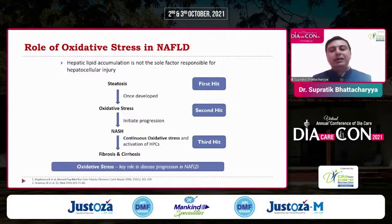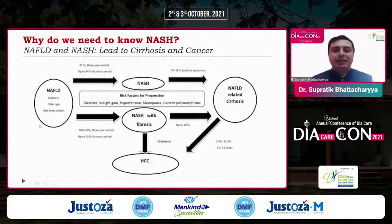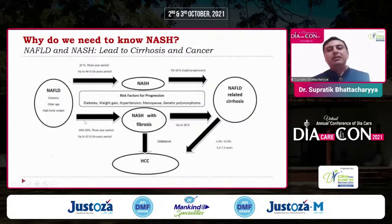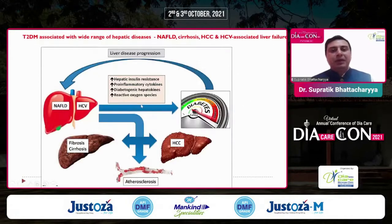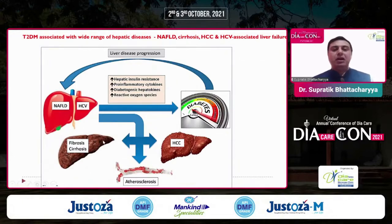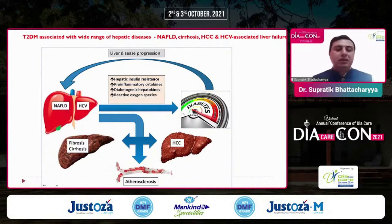Oxidative stress plays a key role in disease progression in NAFLD. The entire spectrum goes from NAFLD to NASH, NAFLD-related cirrhosis, and also NASH with fibrosis — the final stage being hepatocellular carcinoma. Risk factors for progression include dysglycemia, weight gain, hypertension, menopause, genetic polymorphisms, increased hepatic insulin resistance, inflammatory cytokines, diabetogenic hepatokines, and reactive oxygen species — all leading from NAFLD all the way to fibrosis, cirrhosis, and hepatocellular carcinoma.